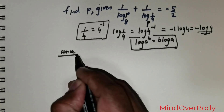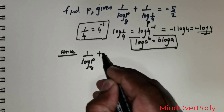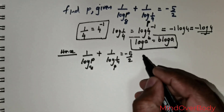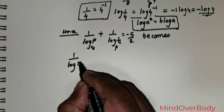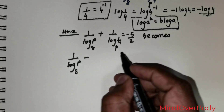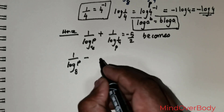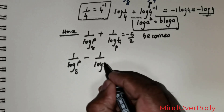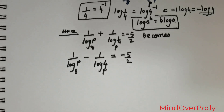Hence, 1 over log p to the base 8, plus 1 over log of 1 over 4 to the base p, equals negative 5 over 2. This becomes 1 over log p to the base 8, minus 1 over log 4 to the base p, equals negative 5 over 2. The positive sign becomes negative because log of 1 over 4 is actually negative log 4.